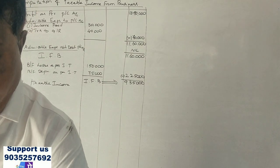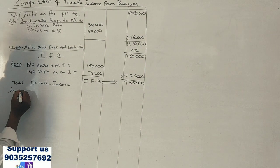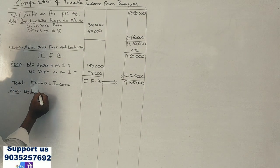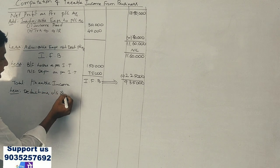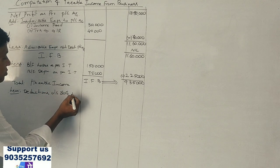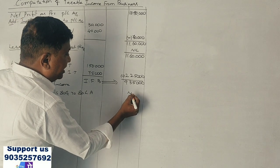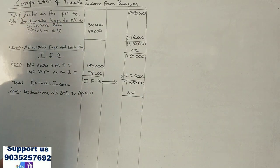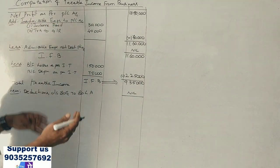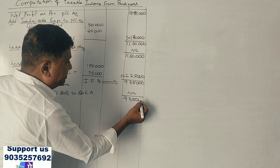What are the deductions here? There are no deductions under Section 80G to 80LA, including donations. That means total income is 9,35,000 rupees.